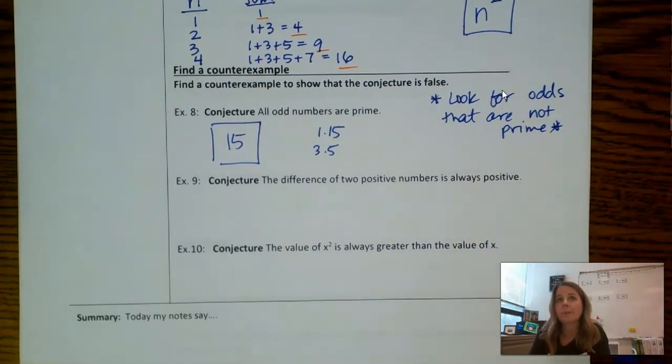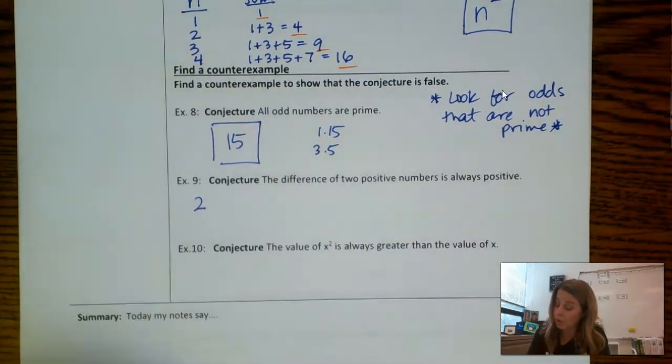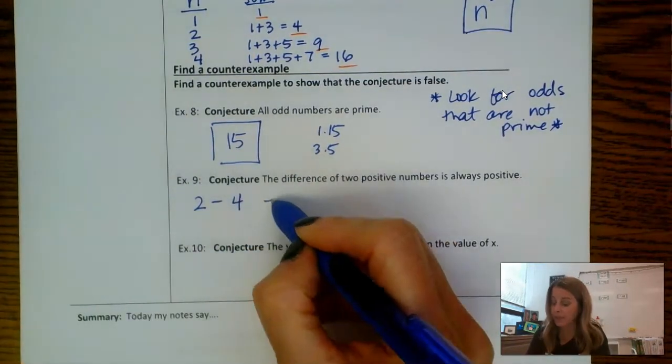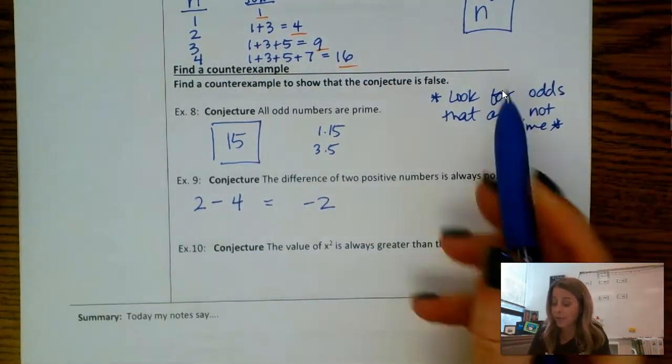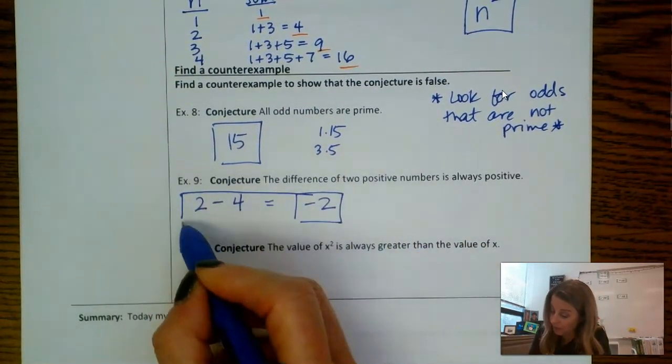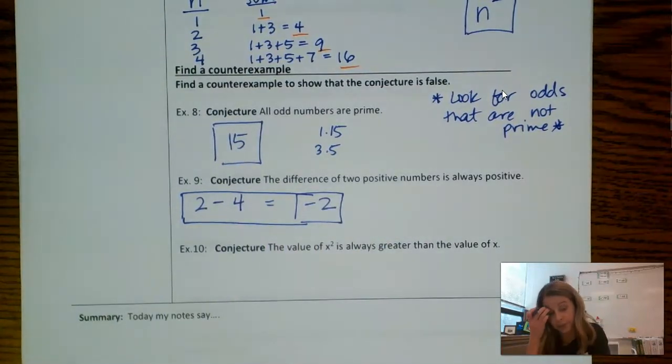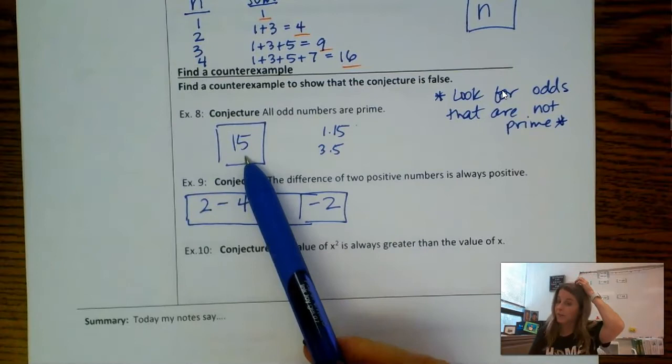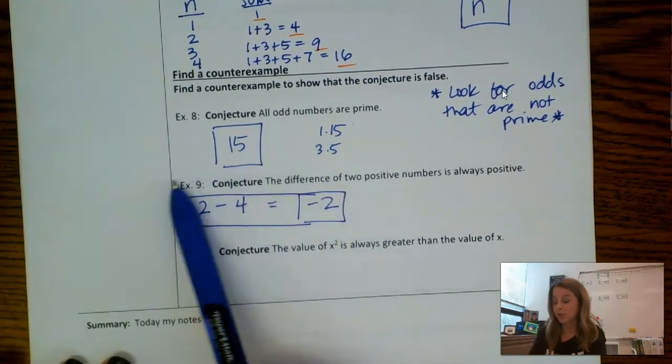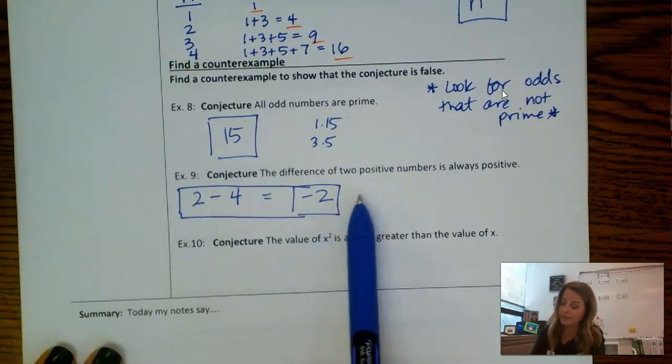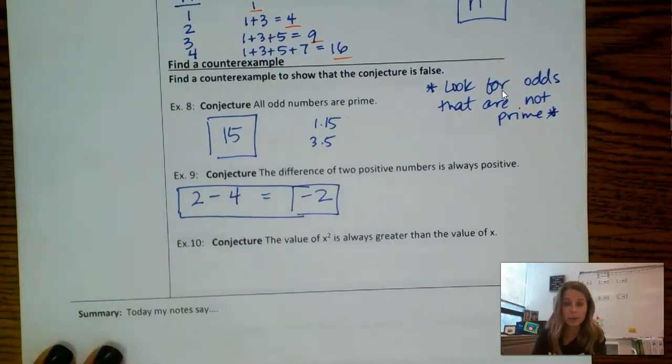So 2 minus 4. Let's say 2 and 4 are my numbers. So if I set it up as 2 minus 4, I get negative 2. Well, negative 2 is not positive. So actually, this whole thing is my counterexample, not just the negative 2. So on the first one, I was just coming up with an odd number that wasn't prime. On this one, I need to show that the difference of two positive numbers is not positive. It'll be negative. So the whole thing is our counterexample.